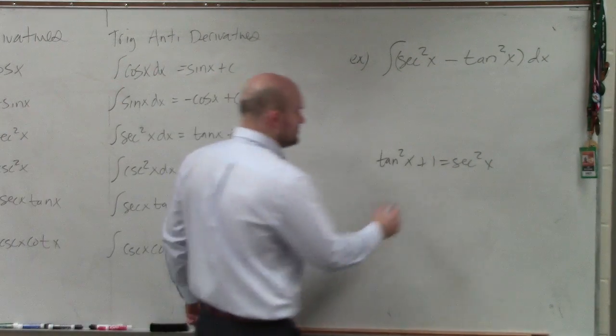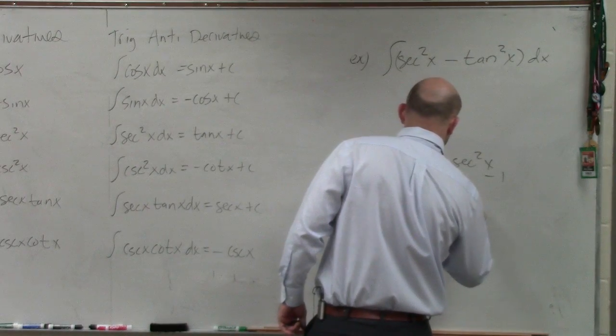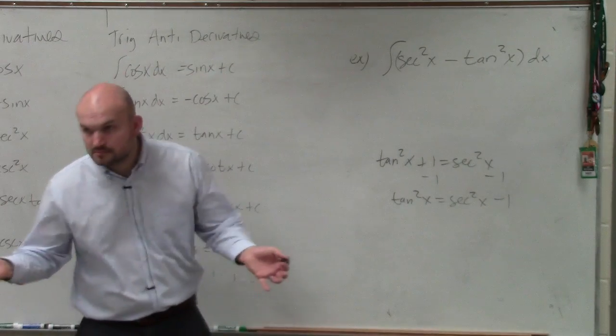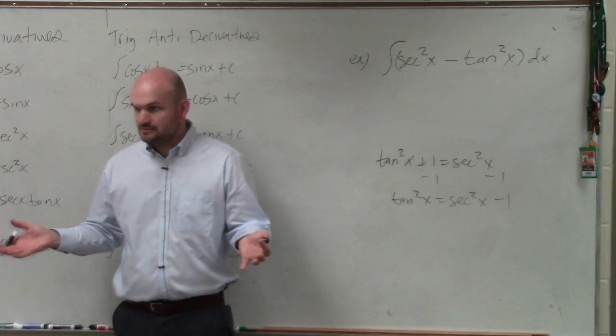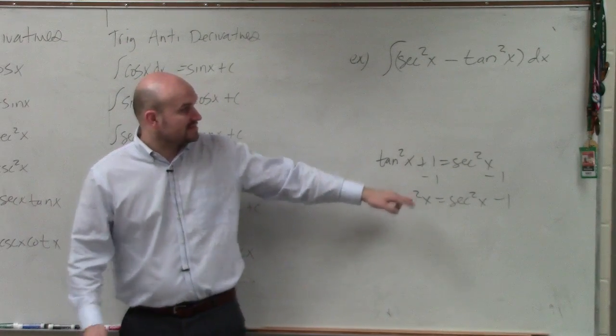So all I got to do is subtract a 1. Tangent squared of x is equal to secant squared of x minus 1. Do you guys agree? So I can just replace tangent of x with secant of x minus 1.